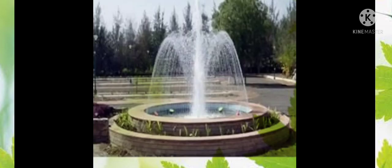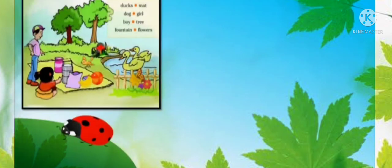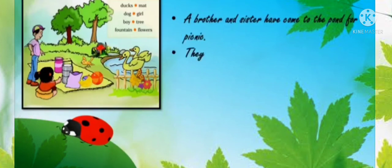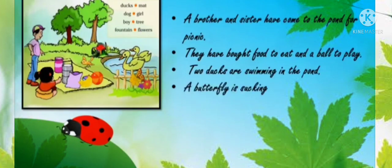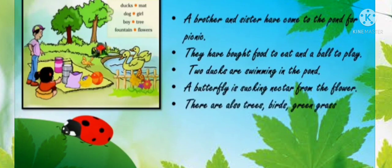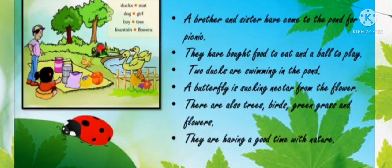Do you know what a fountain is? This is a fountain — you might have seen this in parks. Now let's describe the picture. A brother and sister have come to the pond for a picnic. They have brought food to eat and a ball to play. Two ducks are swimming in the pond. A butterfly is sucking nectar from the flower. There are also trees, birds, green grass and flowers. They are having a good time with nature.